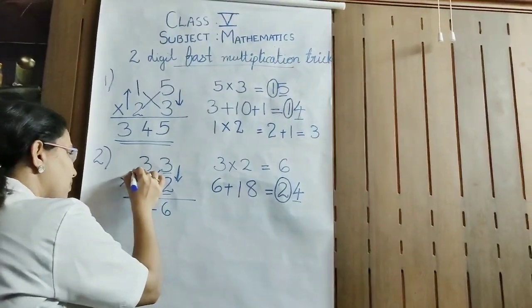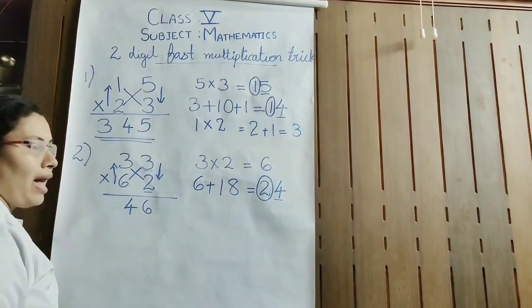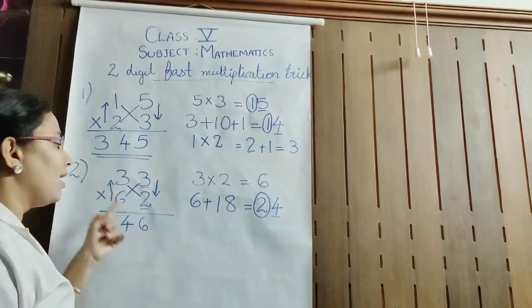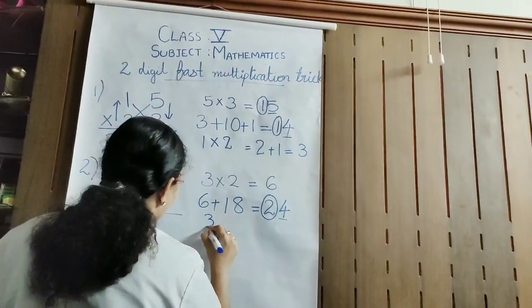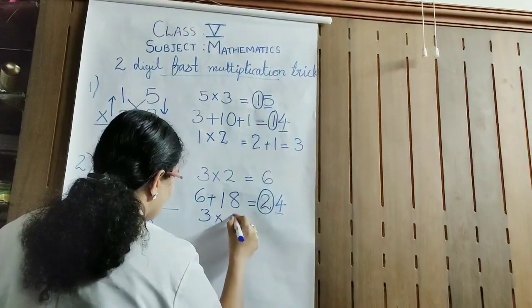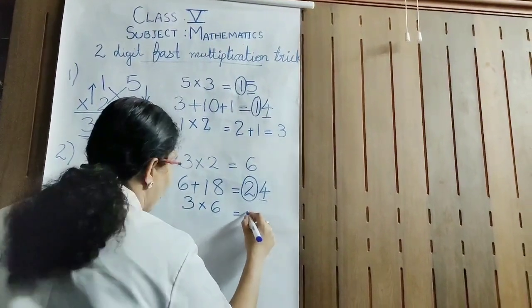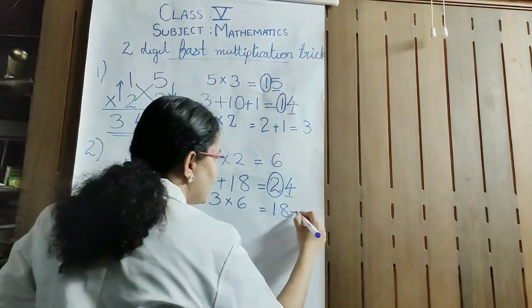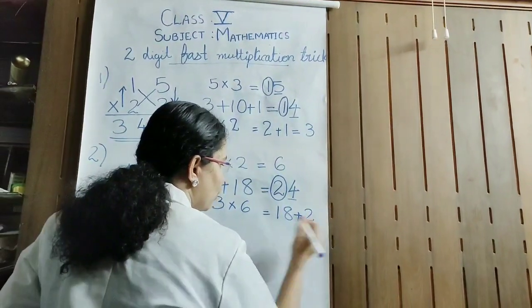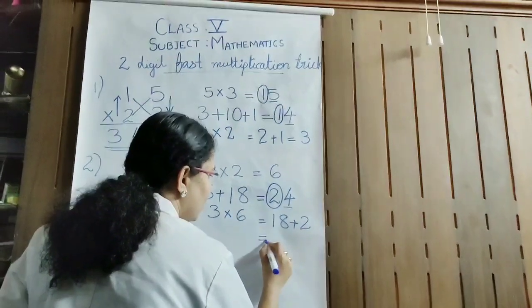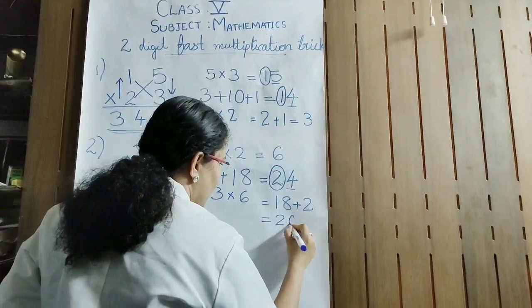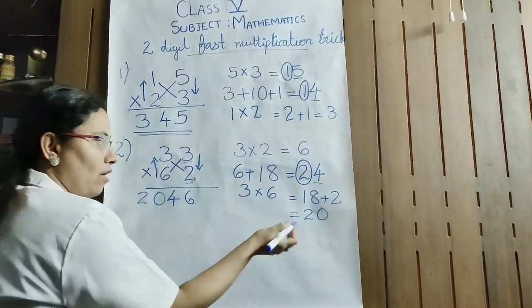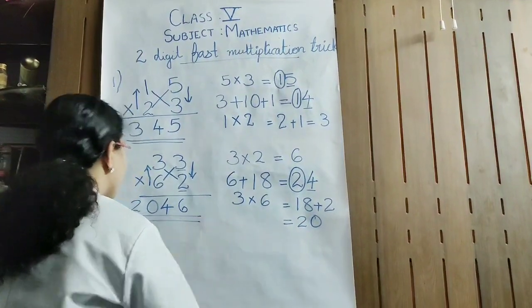Now the third step: you will be multiplying the tens place numbers, that is 3 and 6. Multiplying these two numbers: 3 into 6 gives 18. Plus there is a carry of 2, so this carry is added: 18 plus 2 is 20. So you are going to write it as 20. We will be writing the answer as 2046.